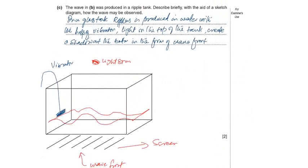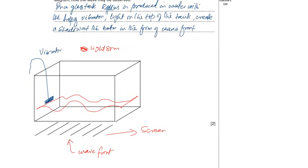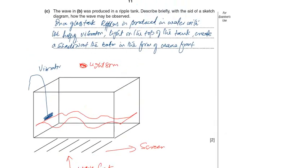And don't forget to label everything, like this is the wave front, this is the screen, this is the vibrator, and the liquid inside the ripple tank. Ripples are produced in water with the help of a vibrator. Light on the top of the tank creates a shadow at the bottom in the form of wave fronts.